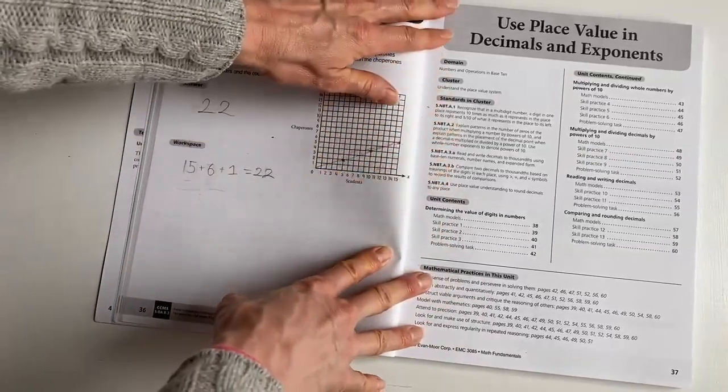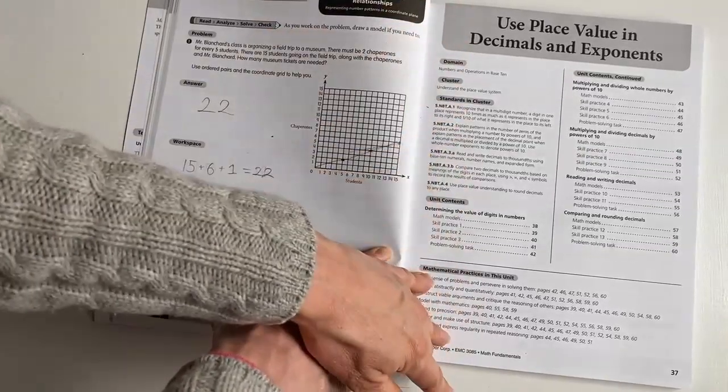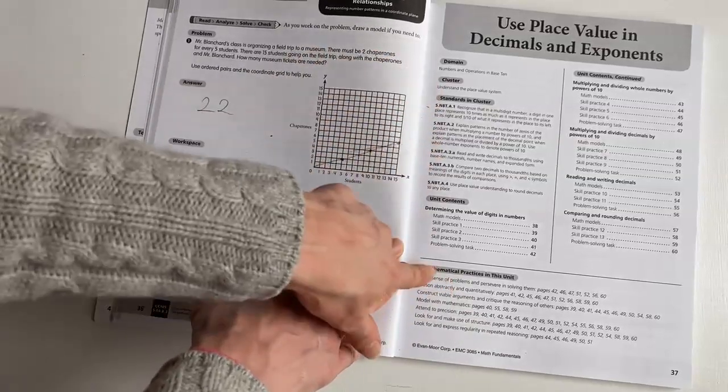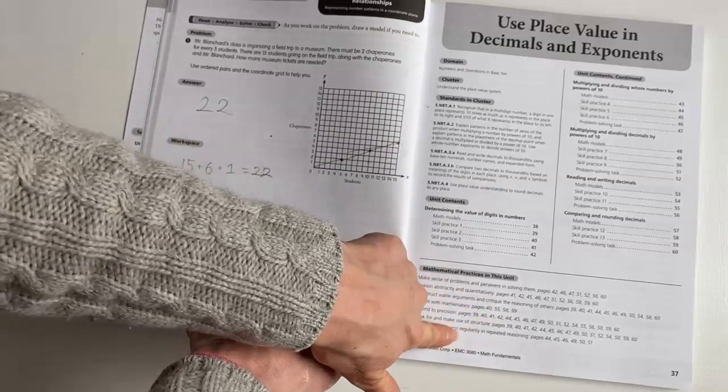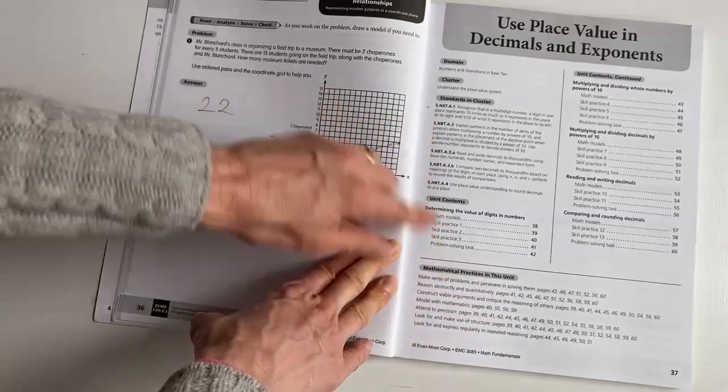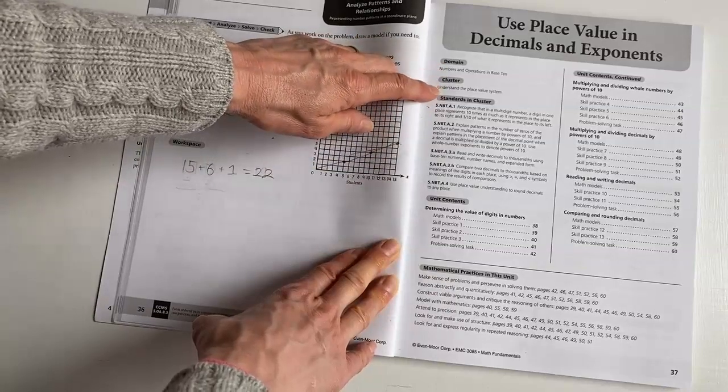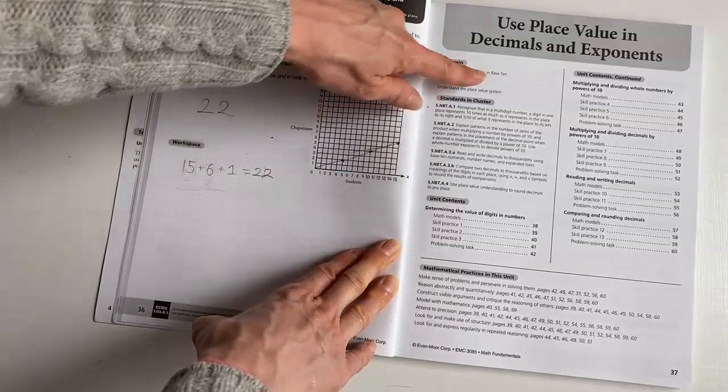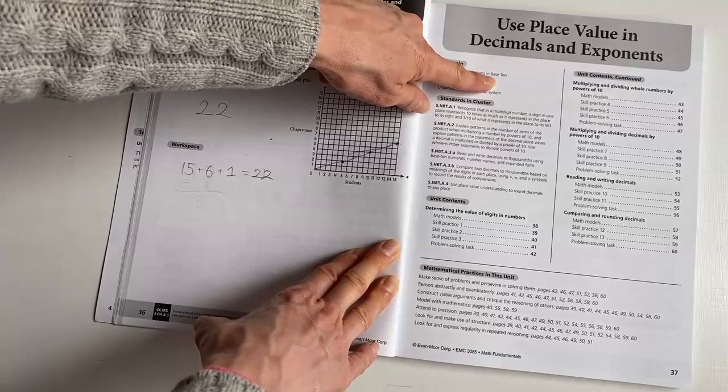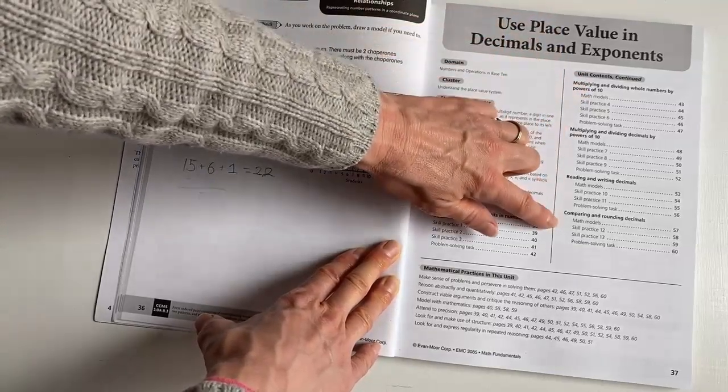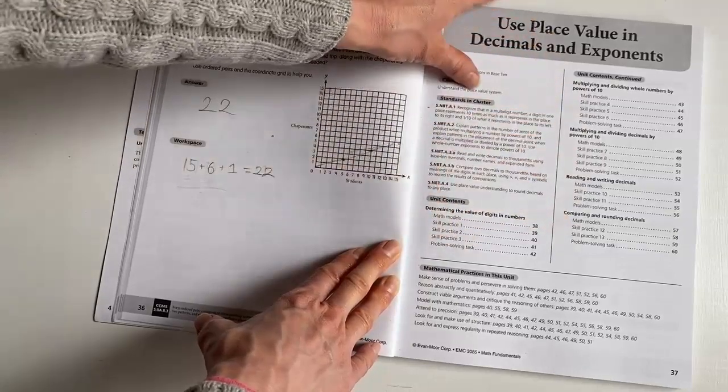Now, this actually has all the reference. If you are following state standards, it gives you what they are. It gives you a list of the math practices and tells you what page numbers they're practiced on. And it basically is telling you that they're understanding the place value system in base 10. And so there's actually the different units. There's four units within this particular section.